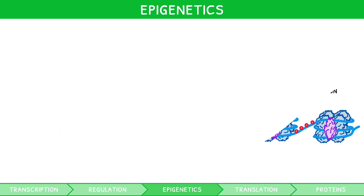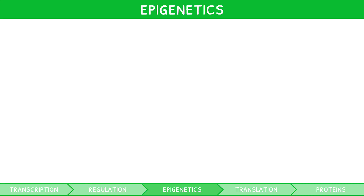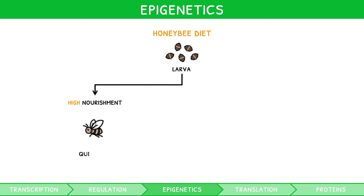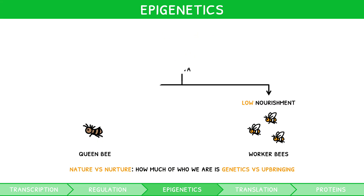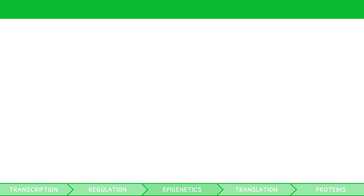A specific example that can be used to explain epigenetics is that of honeybee diet on development. If bee larvae are fed a diet high in nourishment, they develop to form a queen. However, a diet low in nourishment will cause development to a worker. Changes in this way perfectly showcase a potential debate between nature versus nurture, i.e. how much of who we are is made of our genetics versus our upbringing. So, we have discussed in depth the process of transcription and its regulation, but what about translation?